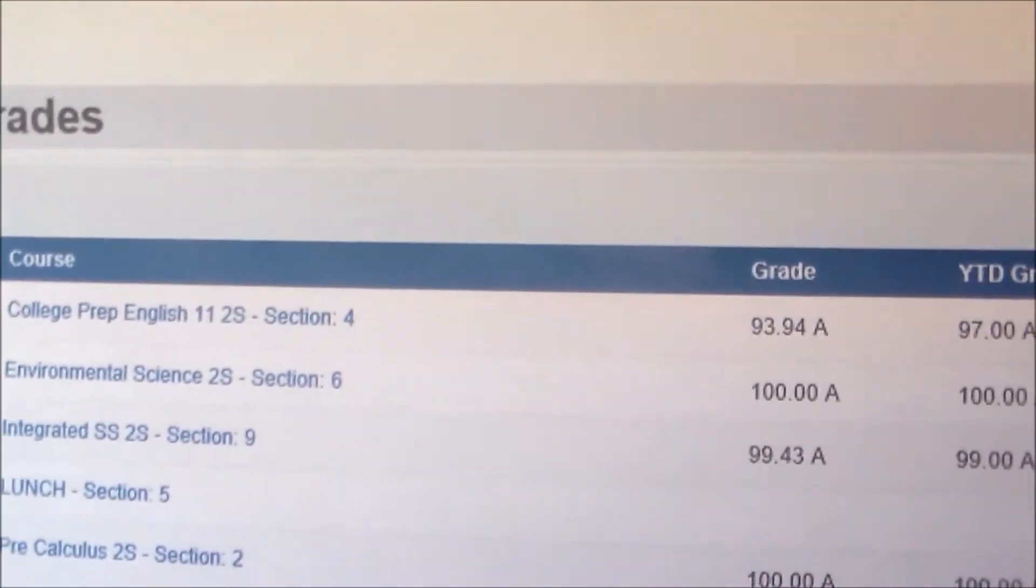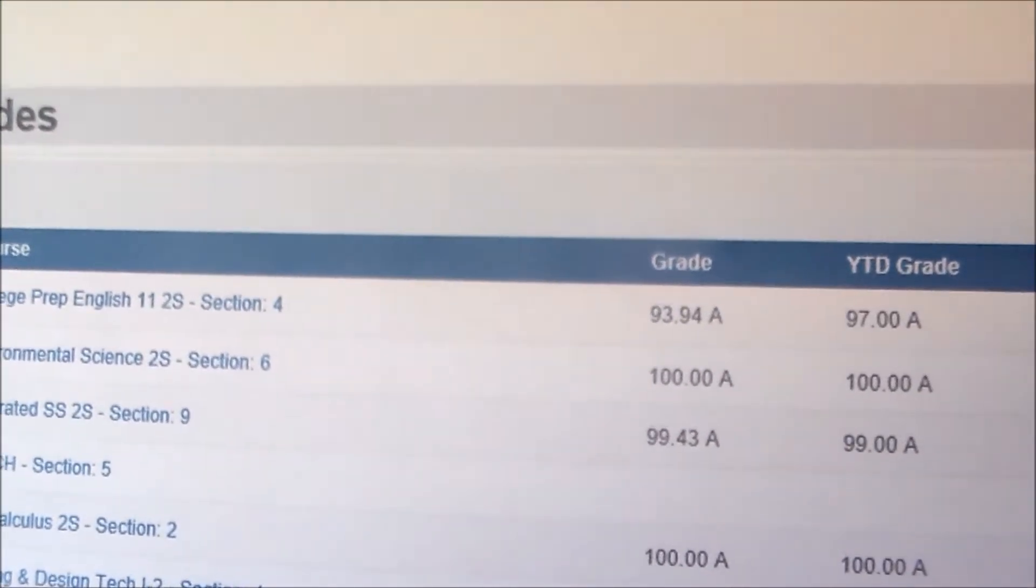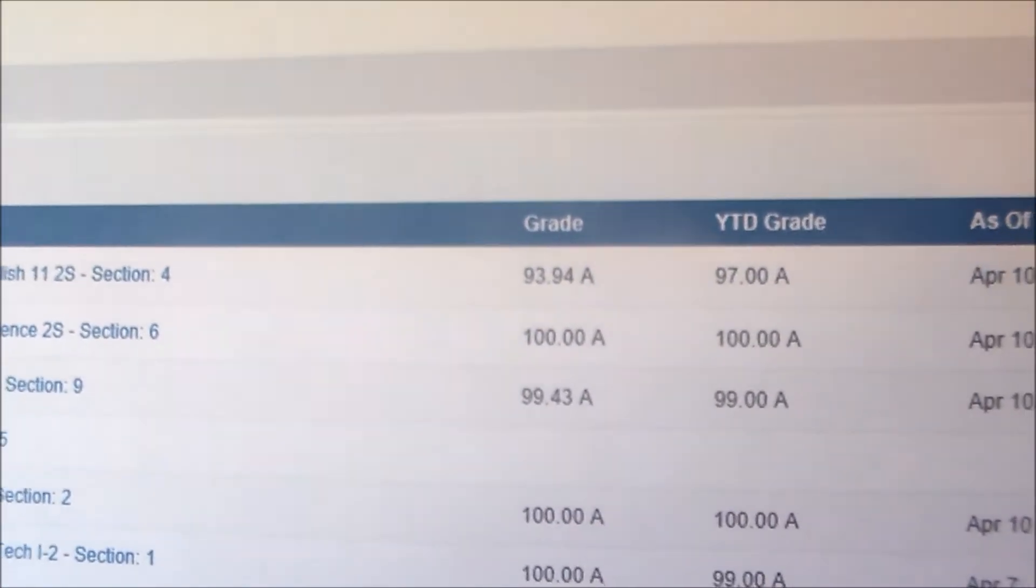So integrated social studies, which is really American history, is 99.43%, and then 99% overall, April 10th.